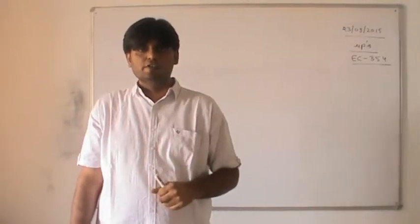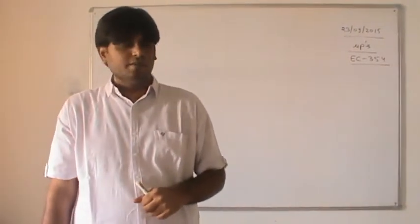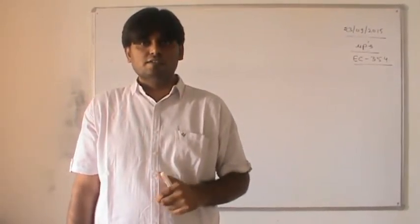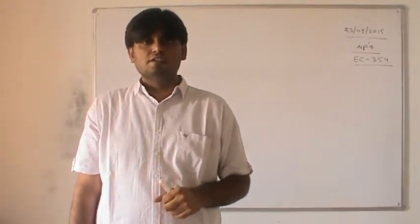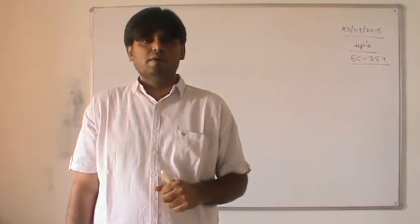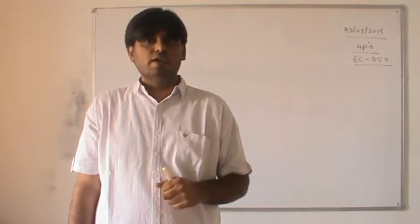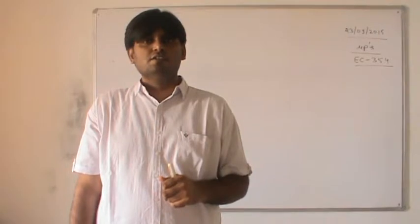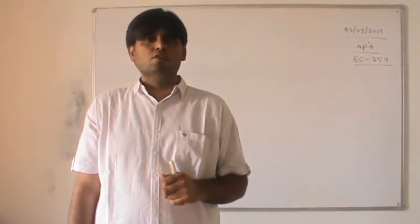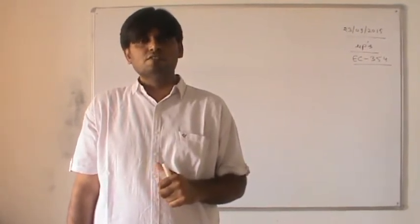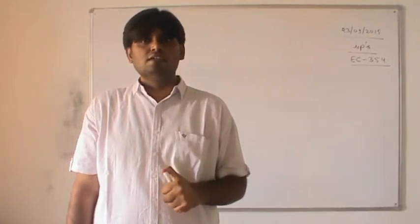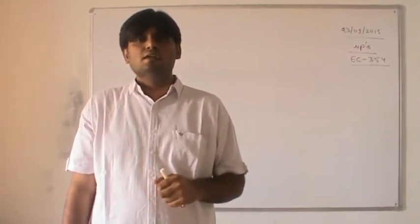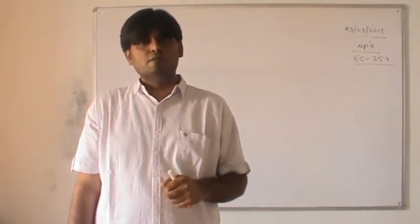Welcome to the video lectures on microprocessors EC354. In the last lecture we went through the instruction set classification, where we saw that there are five categories for classifying the 8085 microprocessor instruction set. We had covered the first two groups: the data transfer group and the arithmetic group. In today's lecture we will conclude the instruction set by going through the remaining three groups: the branch group, the logical group, and the machine control group of instructions.